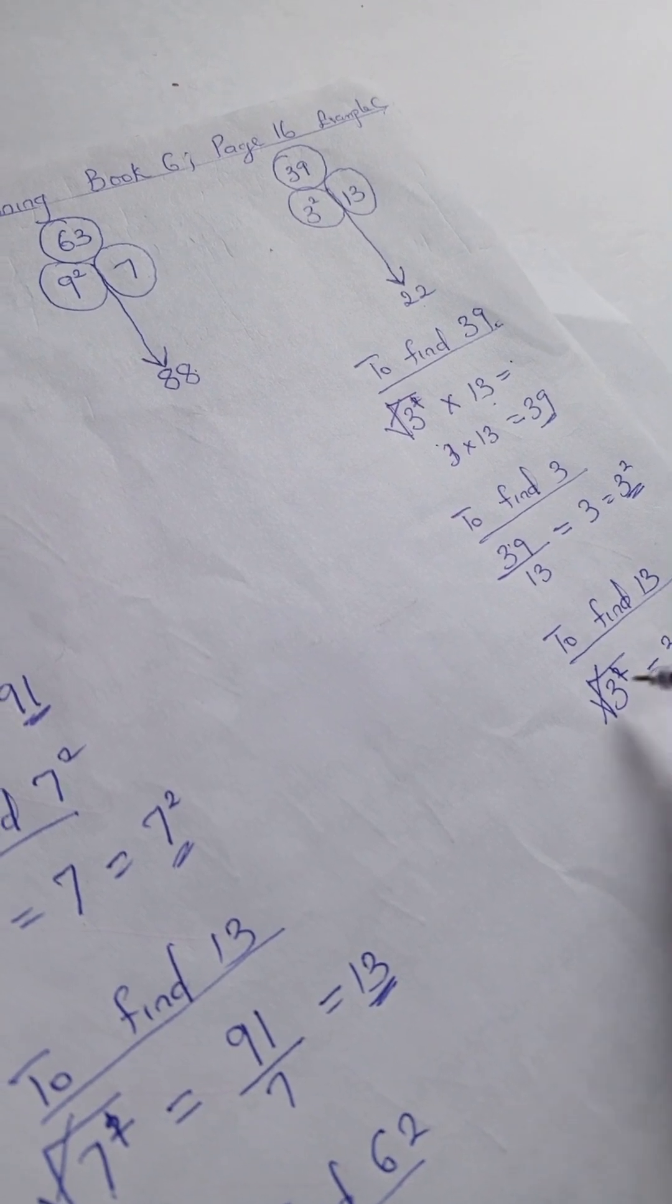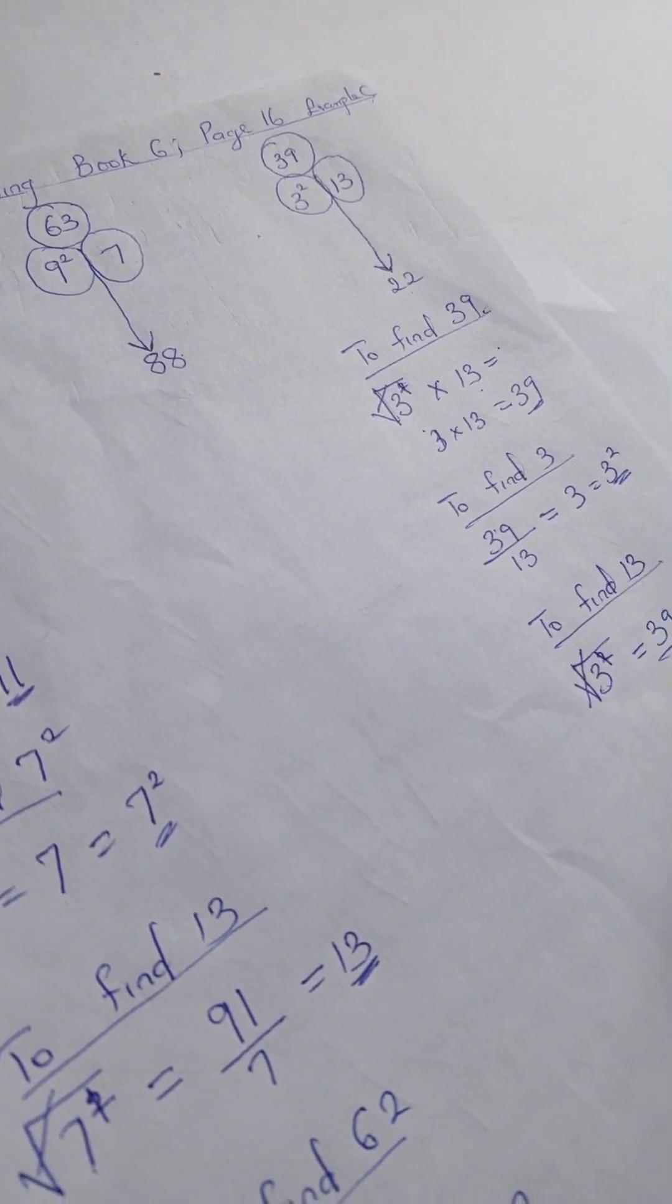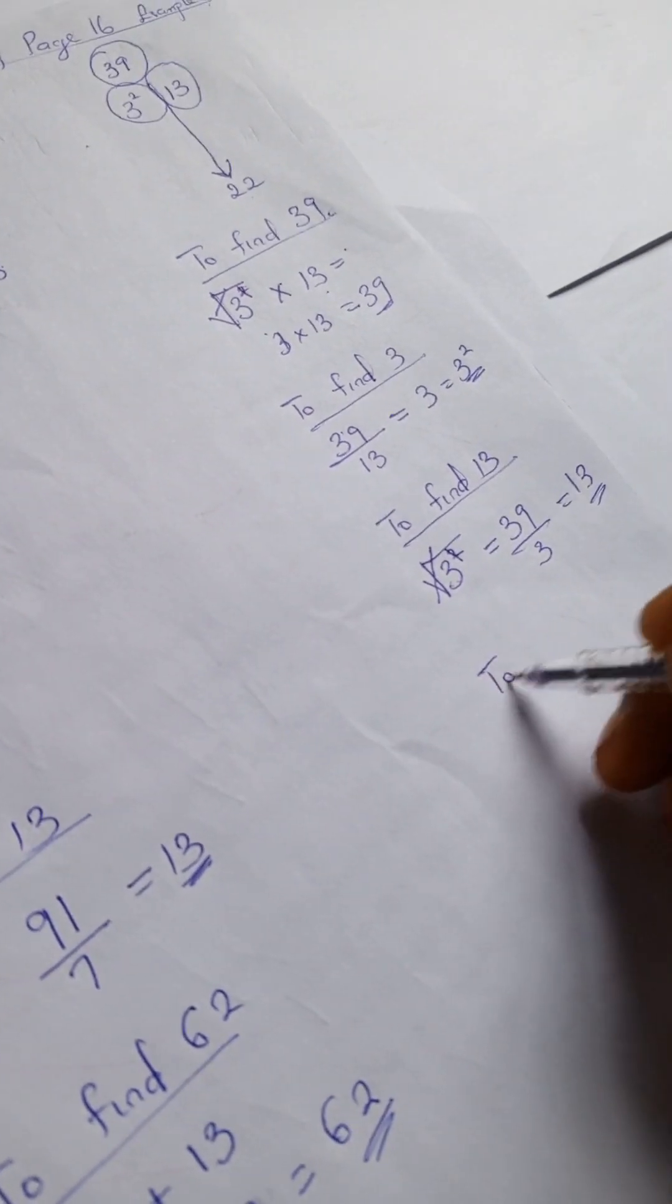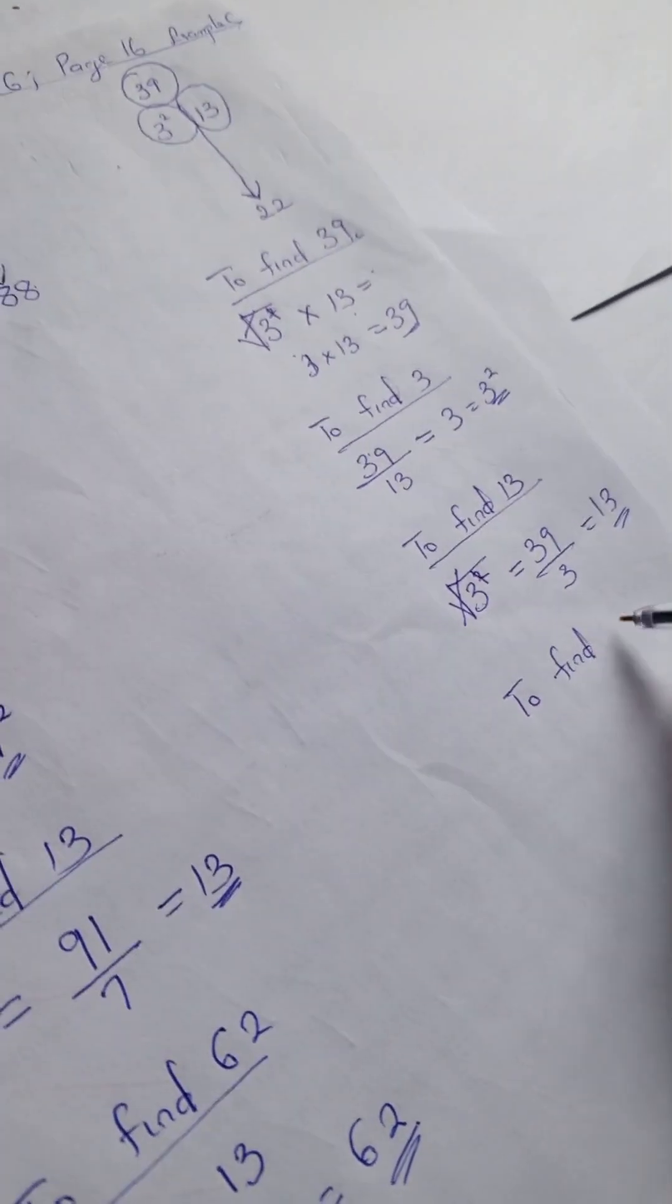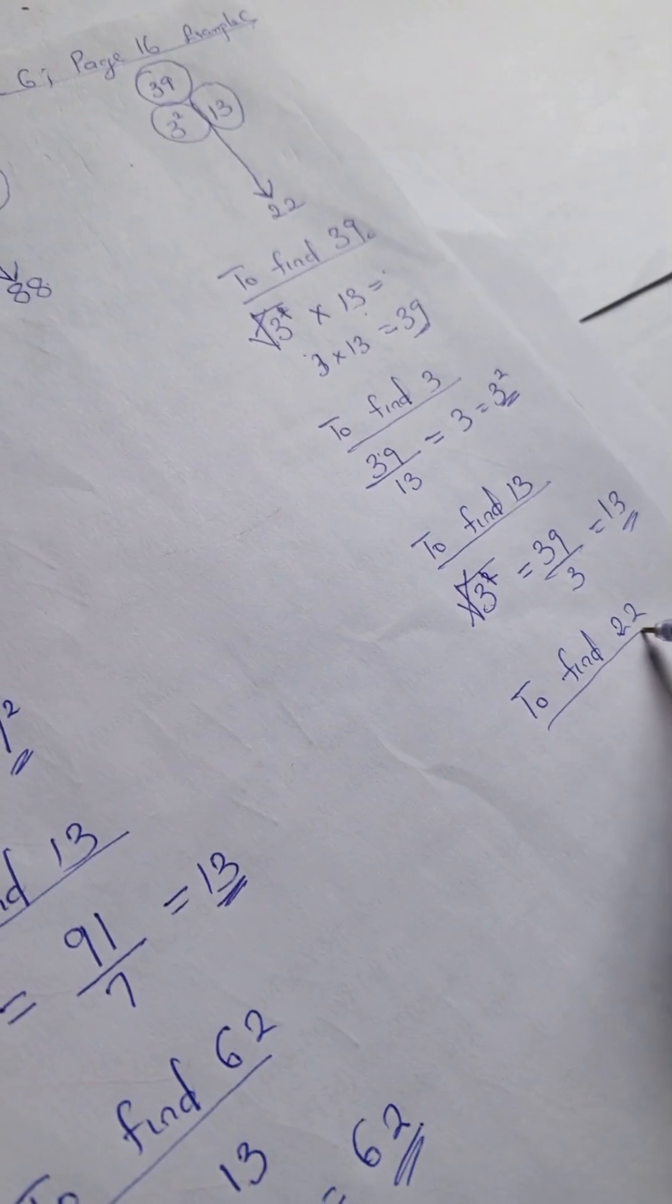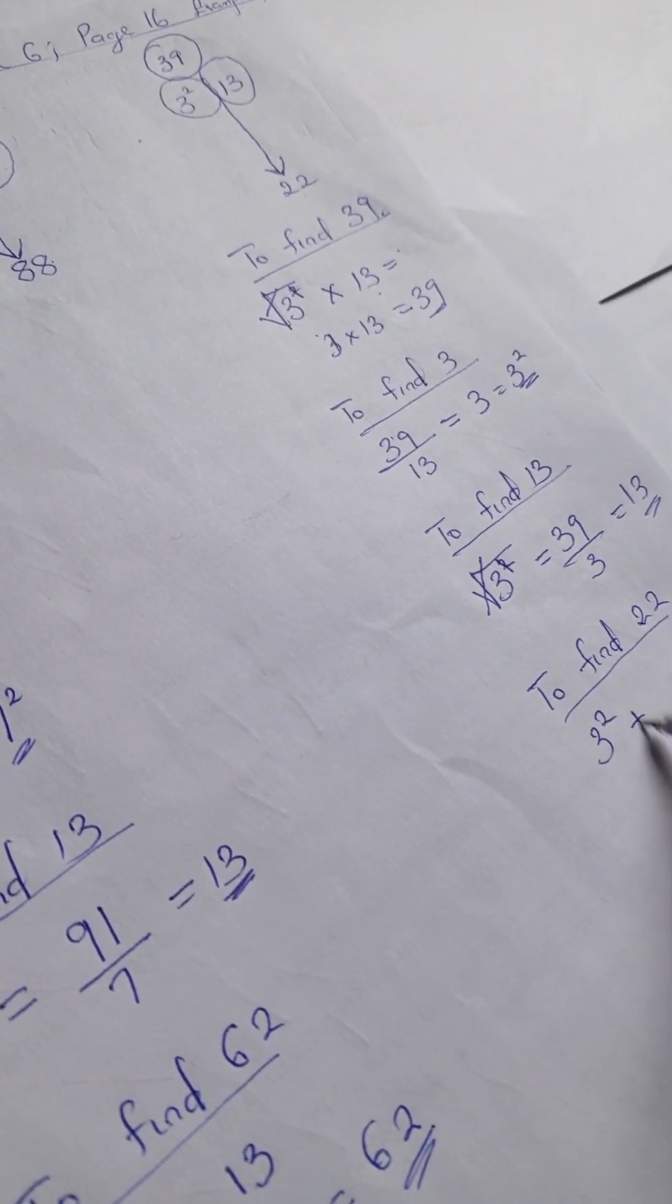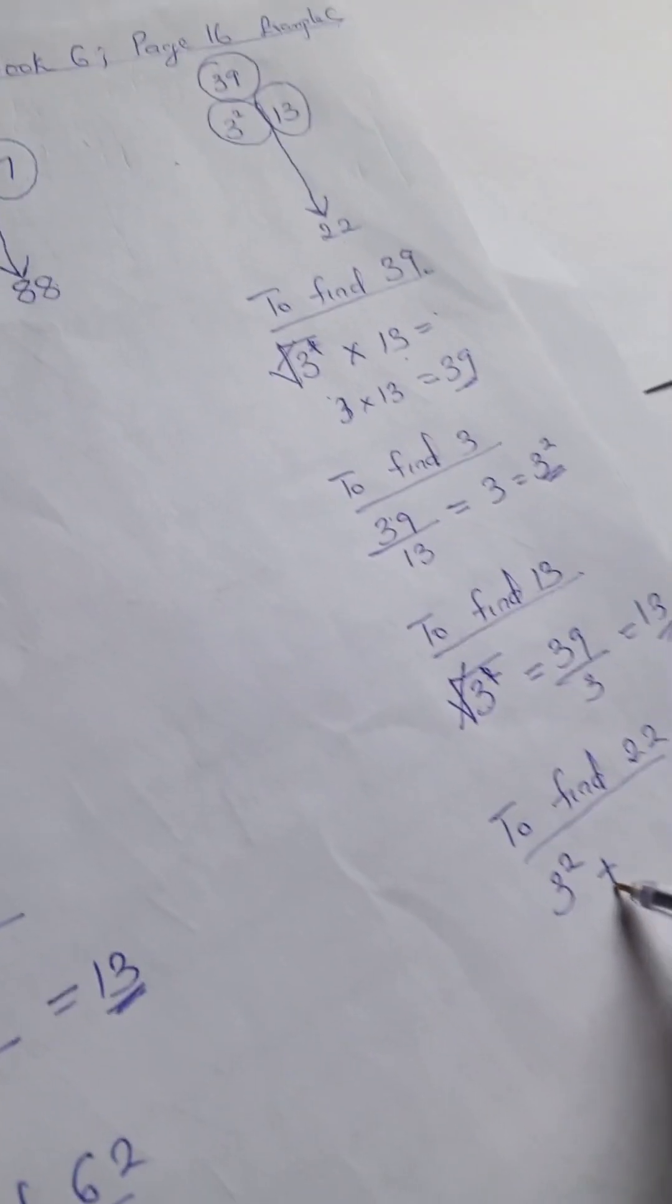And to find 22, 3 squared plus 13. 3 squared is 9 plus 13, we have our 22.